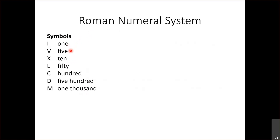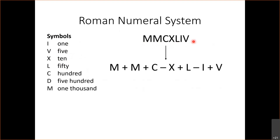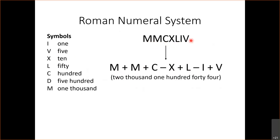There's no symbol for the number four or eight, so we combine symbols in different ways. For example, MMCXLIV uses the rule that consecutive symbols are added, but if a smaller symbol occurs before a larger one, we subtract. So here we get M + M + C − X + L − I + V, which works out to 2144.